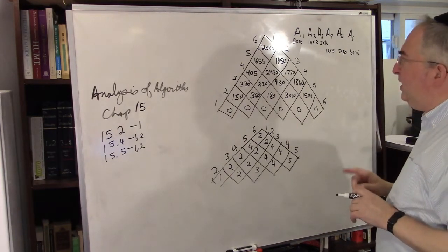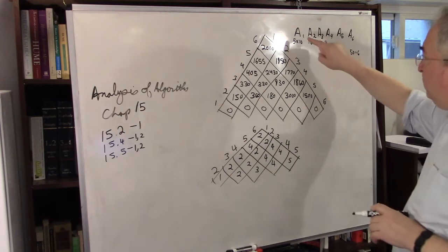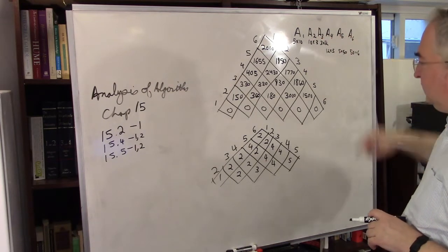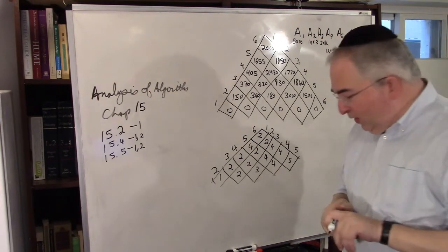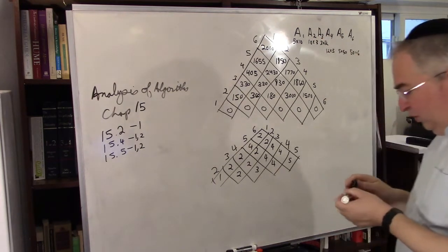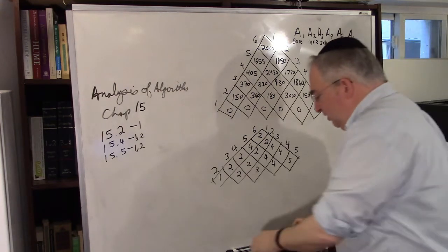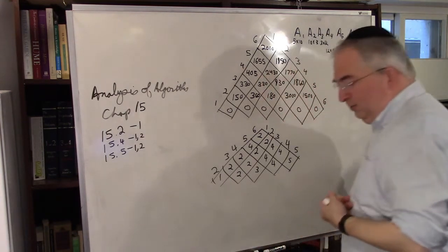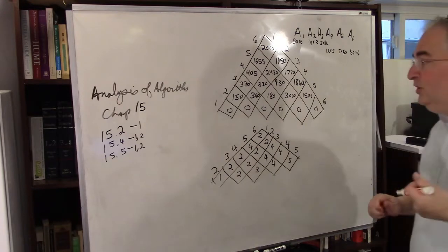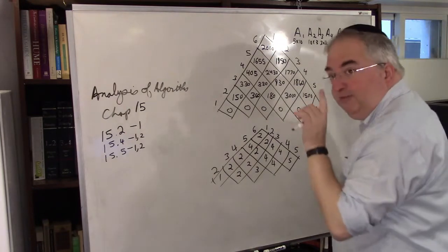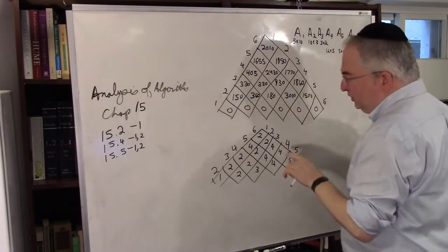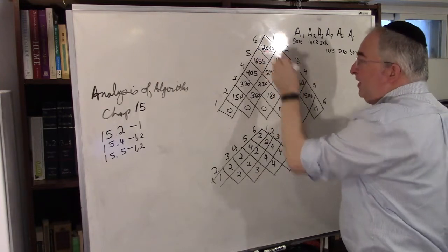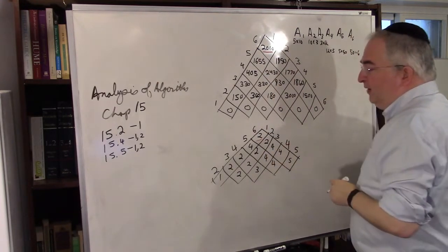Here are the matrices: A1, A2, A3, A4, A5, A6. I just want to show you how you parenthesize — what order it should be done. Watch how to read it from the root matrix. Again, this is your final answer.